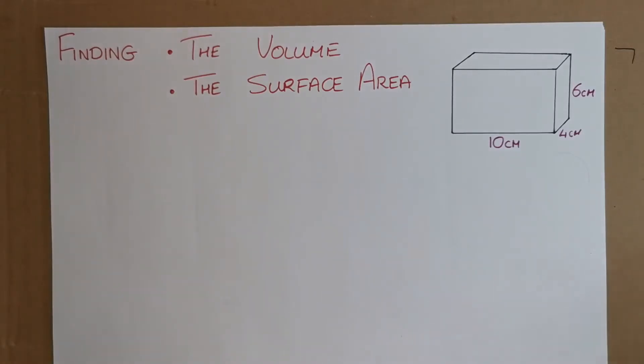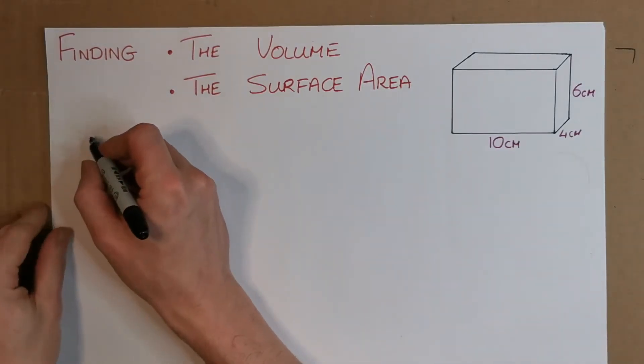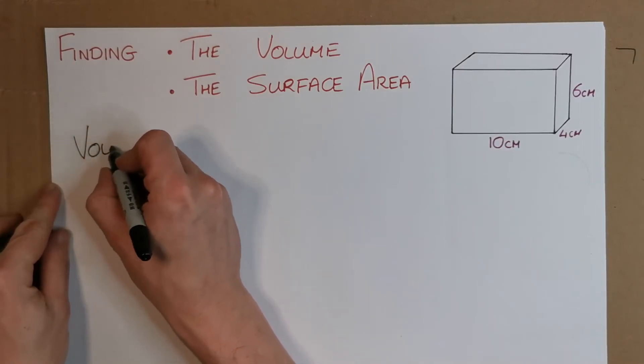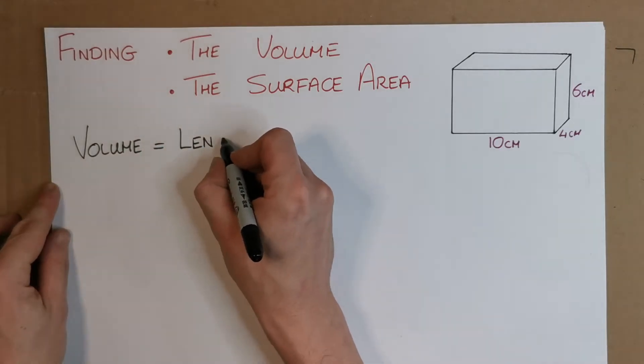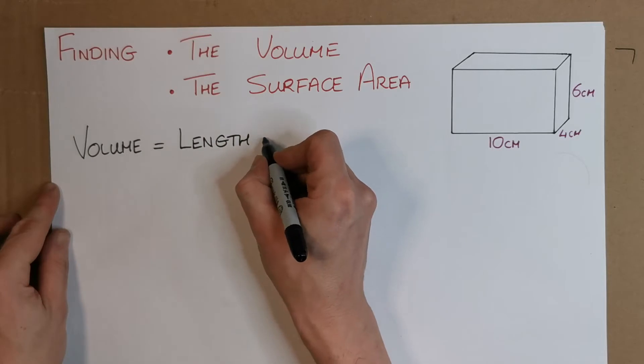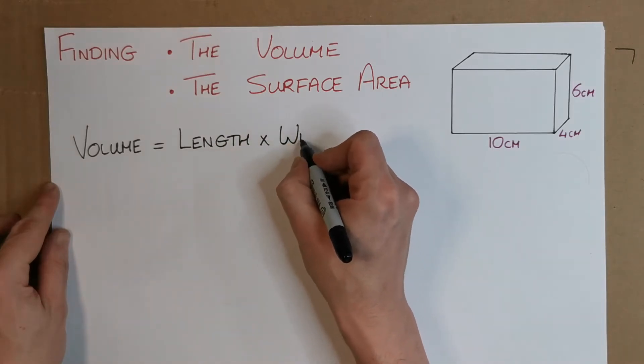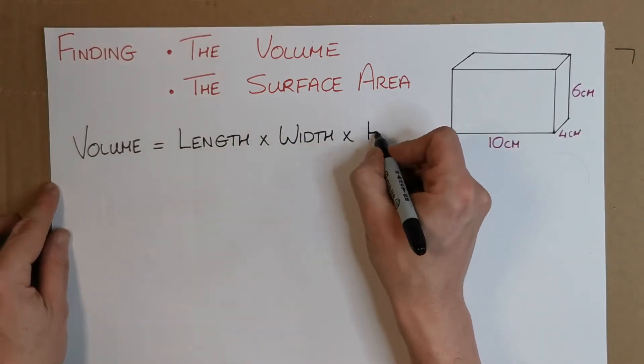So we have two things to find. The volume is easy, so the volume you may know already that it's just a simple formula. For volume it's three measurements, so it's just going to be the length by some width by some height.